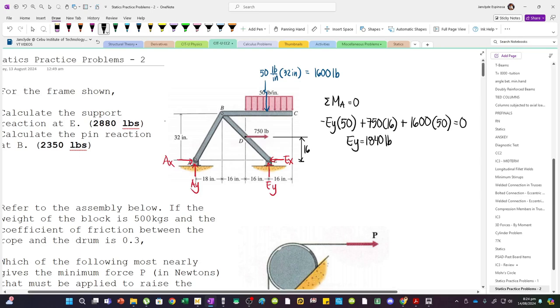So, since we've obtained EY, let's isolate this member, segment BDE. So, for member BDE, this is its FBD. So, this is point B. This is point D. This is point E.